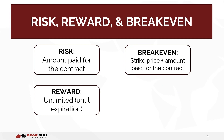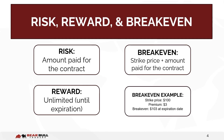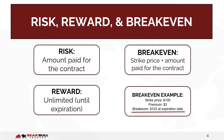Calculating the breakeven point is equally important to understanding how far a contract needs to move to provide a return. Breakeven is the sum of the strike price and the amount paid for the contract. For example, if you purchase a call with a strike price of $100 and a premium of $3, on the day of expiration the stock would need to close at $103 for you to not lose any money on the position. In other words, $103 is your breakeven.